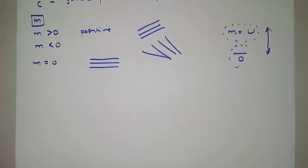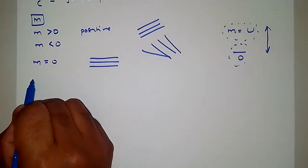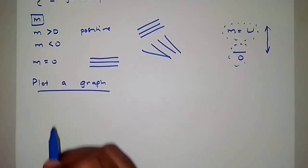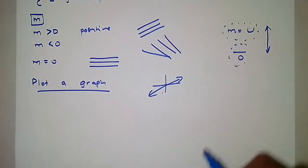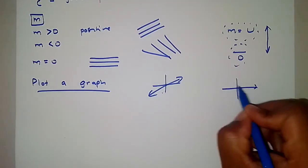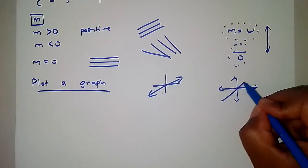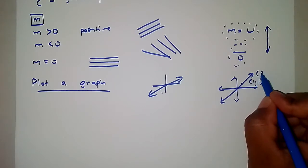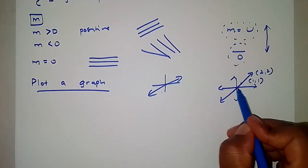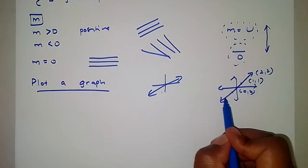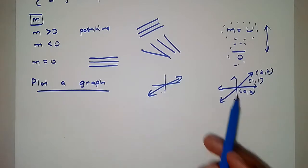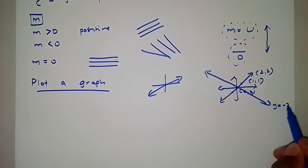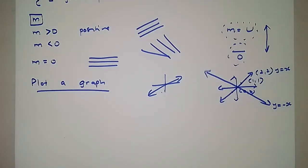Let's not get ahead of ourselves — let's take it one step at a time. Straight lines are graphs of this nature. The line y = x passes through coordinates like (1,1), (2,2), (3,3), (0,0), and (-1,-1). Then y = -x is going to be the reflection — sloping in the opposite direction.